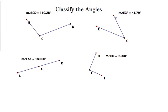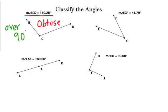Now classifying angles. My first angle is BCD — you can see that in the top left with a measurement. The measurement of angle BCD equals 110.28 degrees, so that would make this angle what we call obtuse. Obtuse is anything over 90 degrees. Since this is 110.28, that is obtuse.